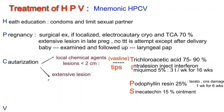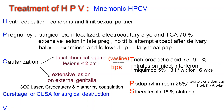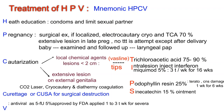In cases of extensive lesions on external genitalia, cauterization by CO2 laser, cryocautery, or diathermy coagulation is used for surgical destruction. Curettage or cavitron ultrasonic surgical aspirator (CUSA) is used for large and bulky lesions. V: Antiviral — 5-fluorouracil 5%, approved by FDA, applied 1–3 times a week for several weeks.